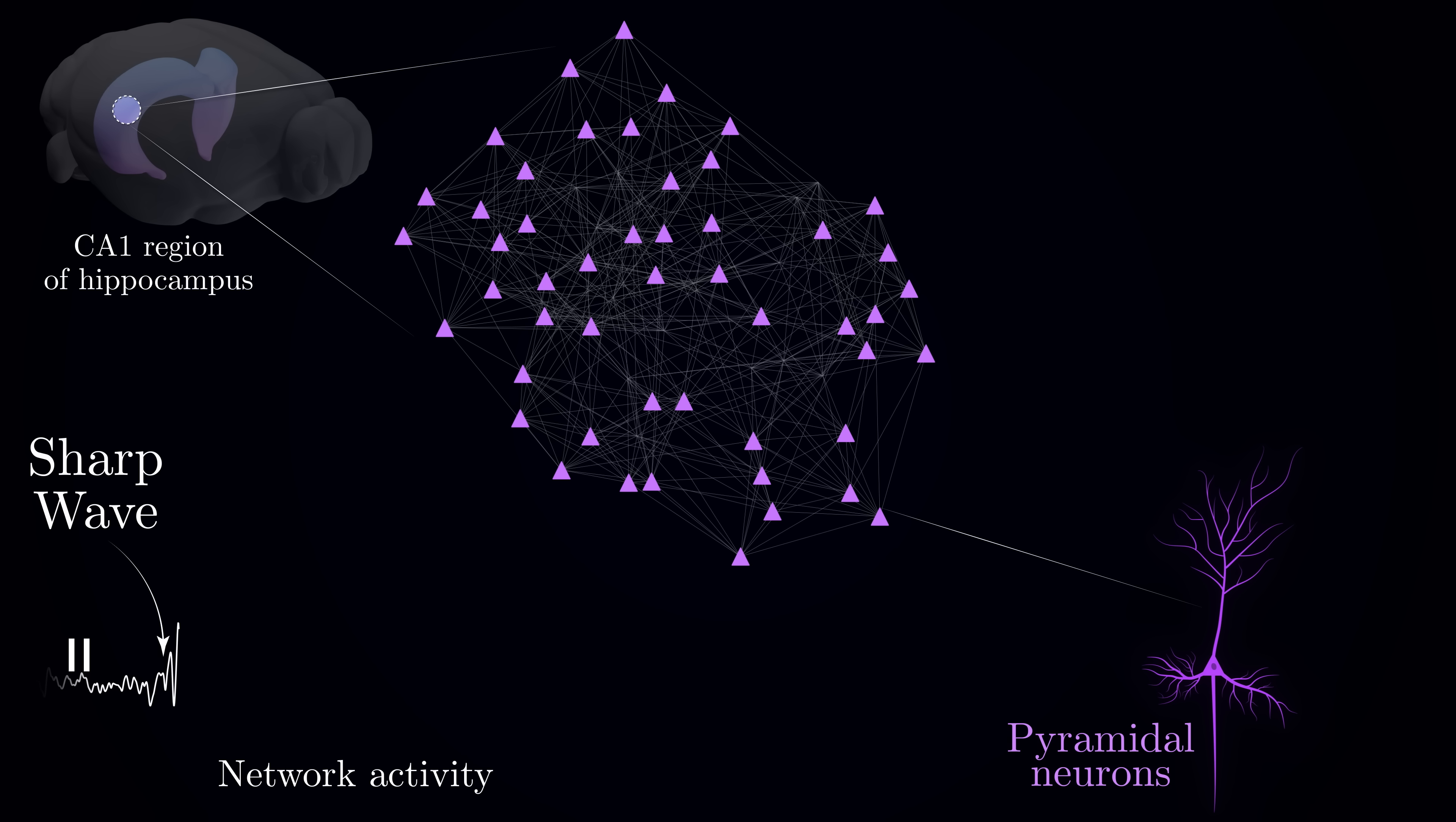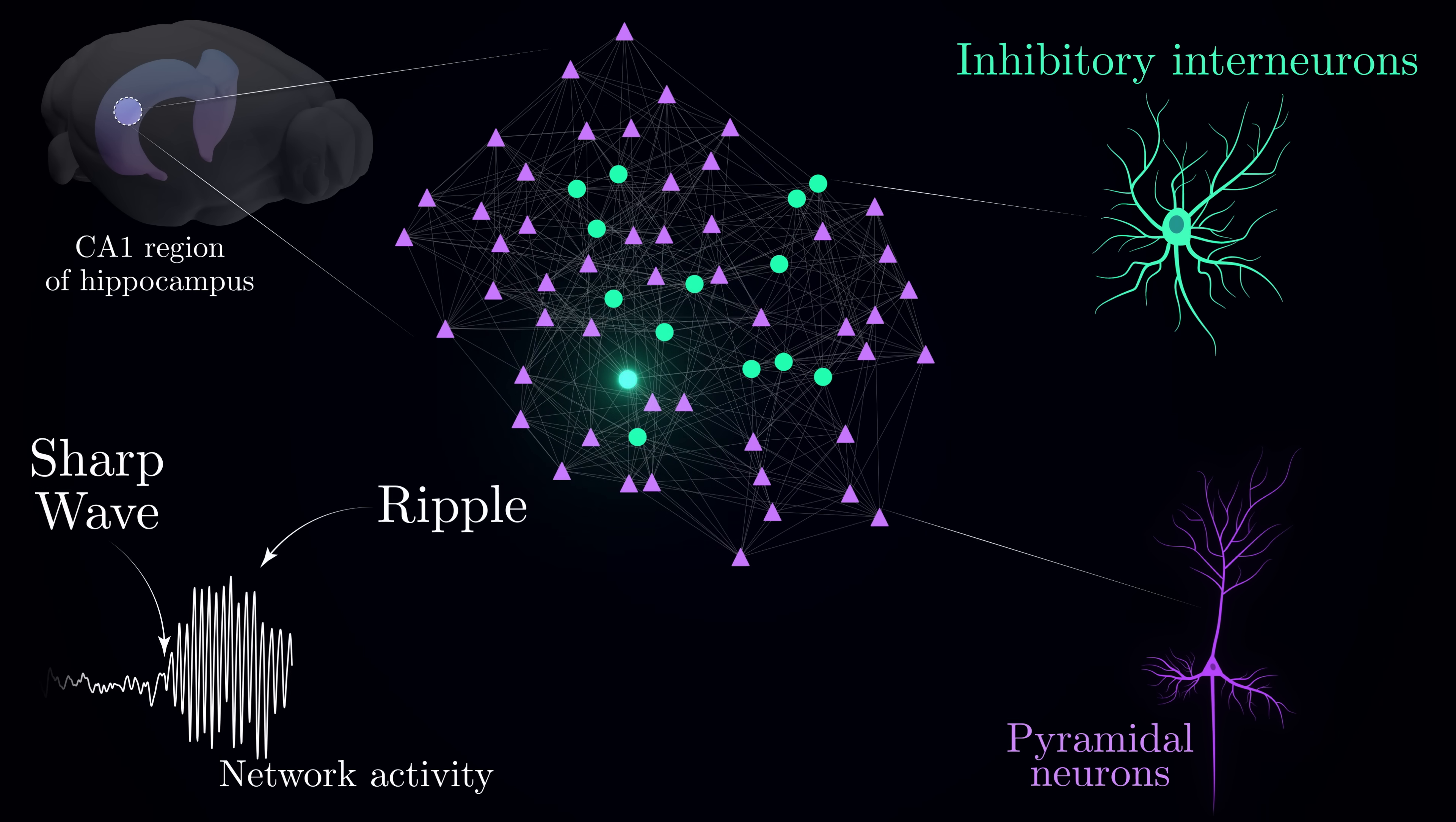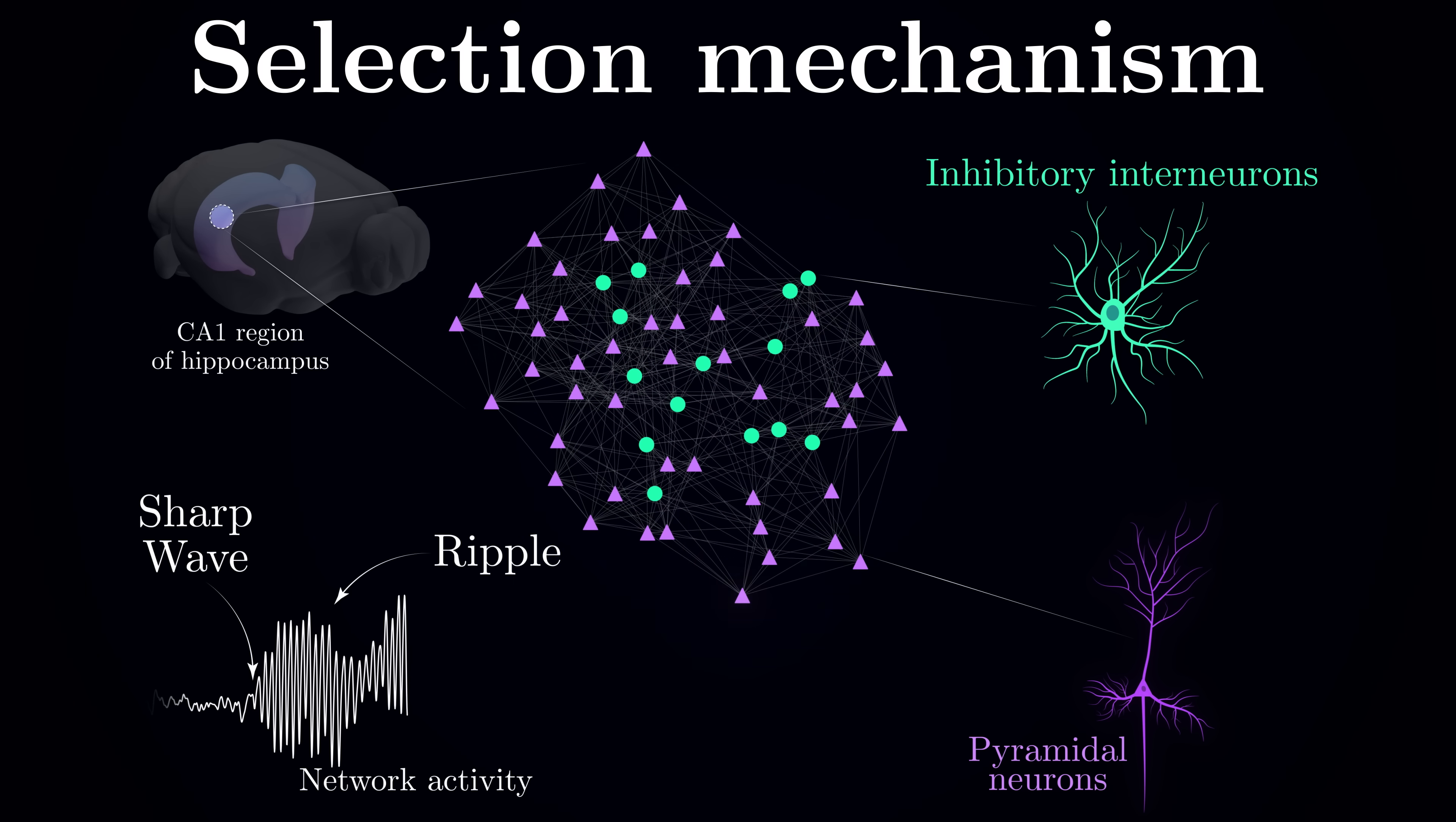But the brain is prepared for this surge. It has safety mechanisms built into the circuit. Networks of inhibitory cells rapidly spring into action when activity rises too high, suppressing other neurons. This creates a rapid back-and-forth between excitation and inhibition that appears as a high-frequency ripple riding on top of the sharp wave.